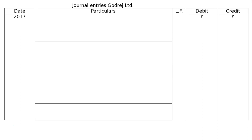Now, we have the journal entries of Godrej Limited. We have to draw the proper format. The year is 2017, and there will be rupee symbols in the last two columns.